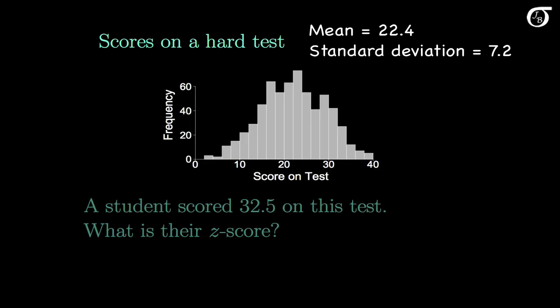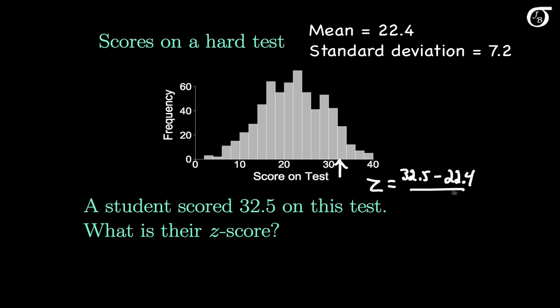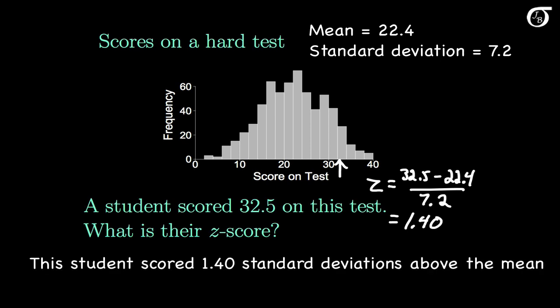Let's look at an example. Here's a real data set involving test scores on a hard test I once gave to students. The test was out of 40 and the mean was 22.4 with a standard deviation of 7.2. One of my students scored 32.5 on this test. The z-score corresponding to 32.5 is 32.5 minus the mean of 22.4, divided by the standard deviation of 7.2, which rounded to two decimal places is 1.40. This means that this student scored 1.40 standard deviations above the mean.